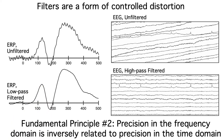This leads to fundamental principle number two: precision in the frequency domain is inversely related to precision in the time domain. Filtering increases our precision in the frequency domain by giving us a narrower band of frequencies, but when we increase our frequency domain precision this way, we're actually losing temporal resolution.